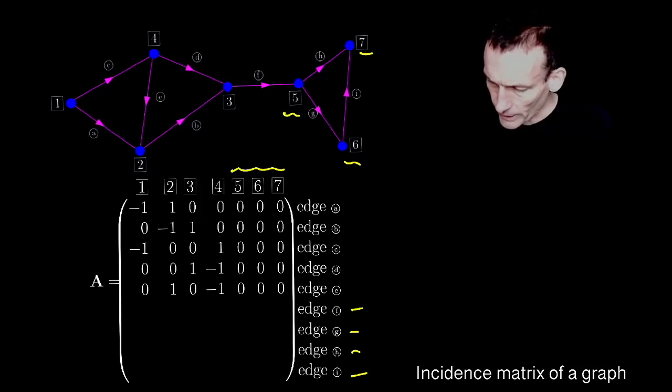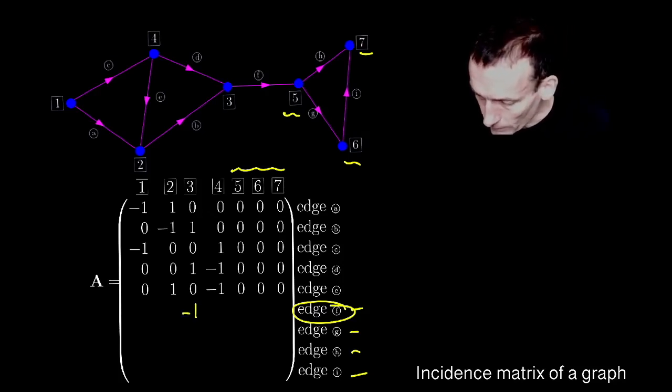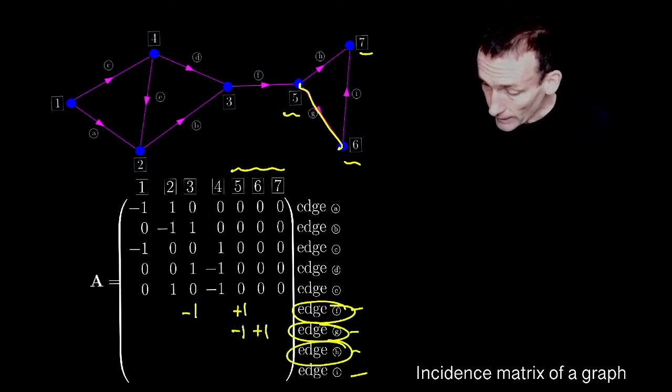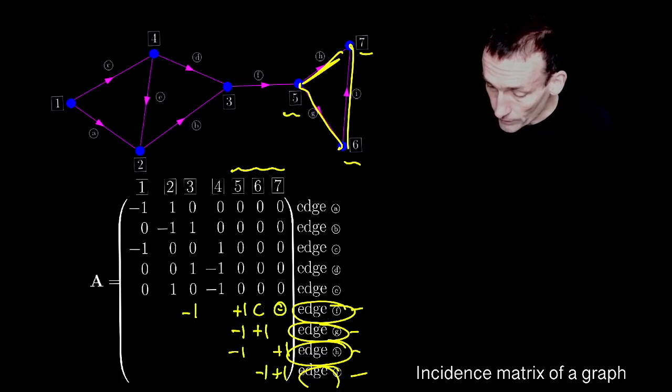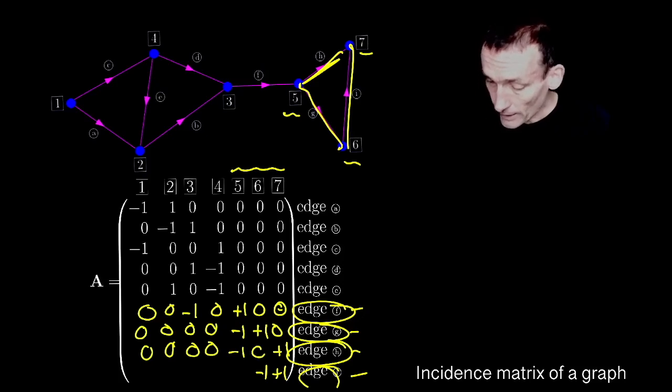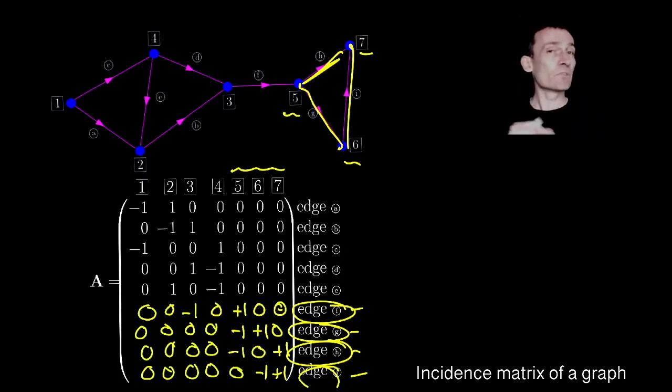So let's just finish off this matrix here. If we look at edge F, with the arrows I've drawn, and I picked those at random, I've got a minus one from three and it goes plus one there. Edge G is this one. It goes out of five and into six. Node H is this one, and it goes out of five and into seven. And finally, edge I goes out of six and into seven. And then what I do is just to finish this off, I just add these zeros everywhere. Because remember, there's only zeros except for where you put the ones, the plus and minus ones, dictated to you by the edges.